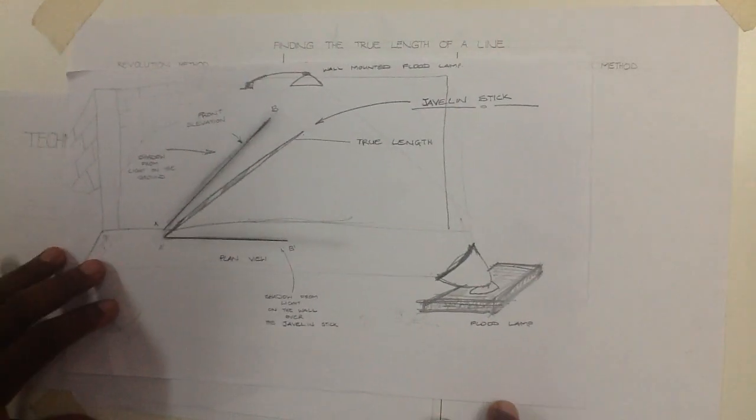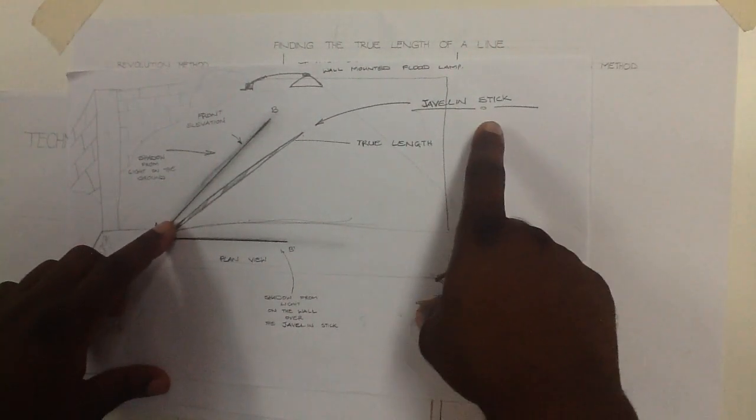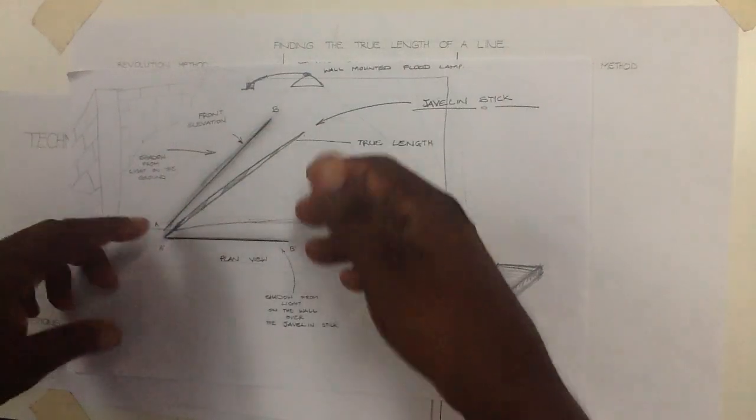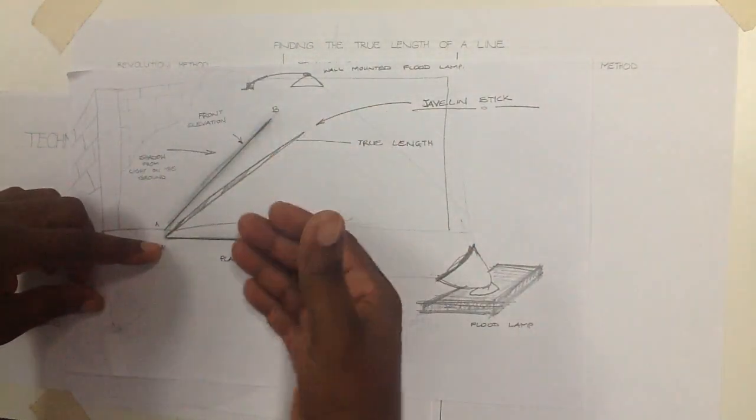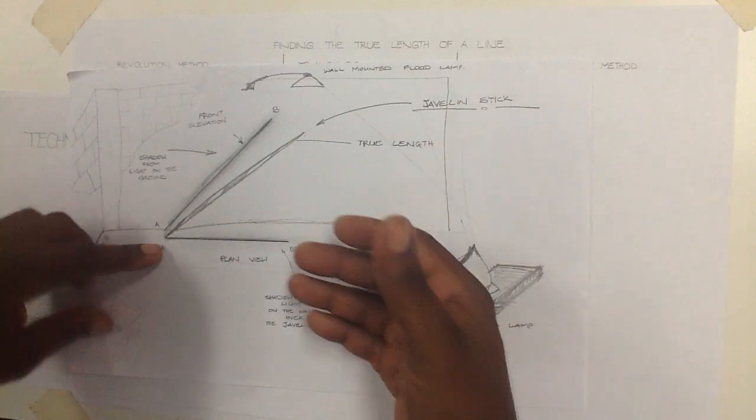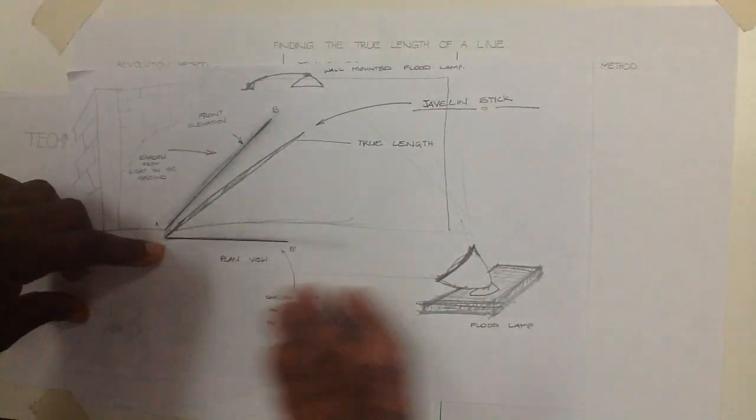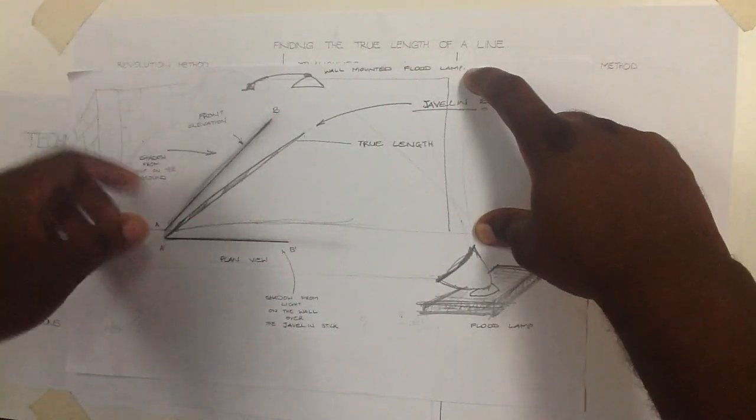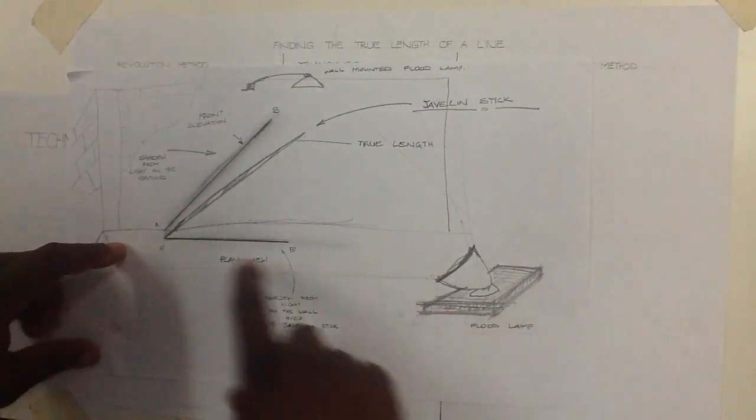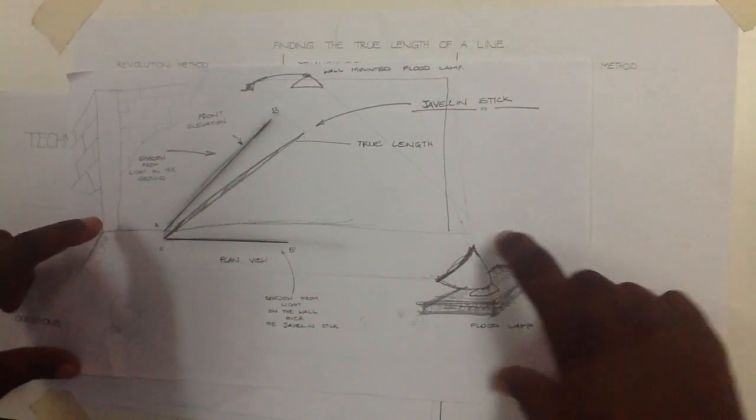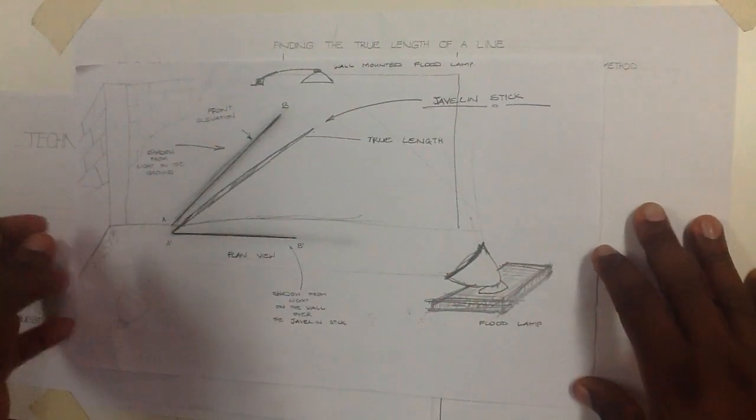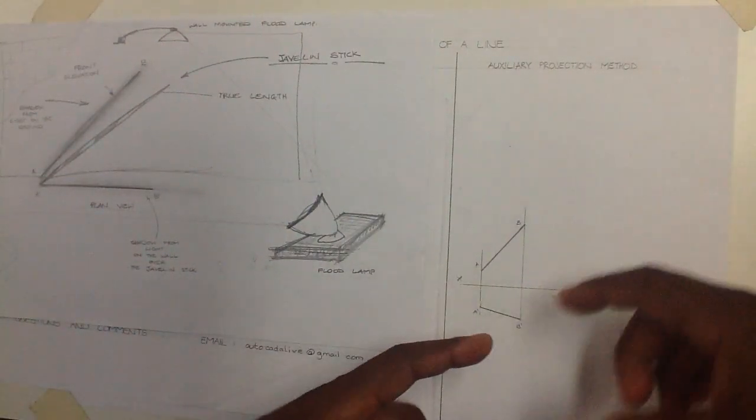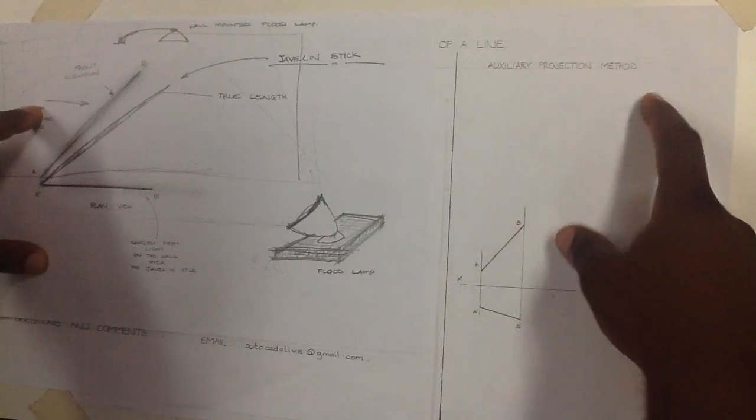It is important to note that we are still considering the example where the javelin stick that was thrown pitched into the ground at an angle away from the horizontal plane and also at an angle to the vertical plane. In the vertical plane we have the front elevation and in the horizontal plane we have the plan view. So now we're moving to constructing the true length of this line using the auxiliary projection method.